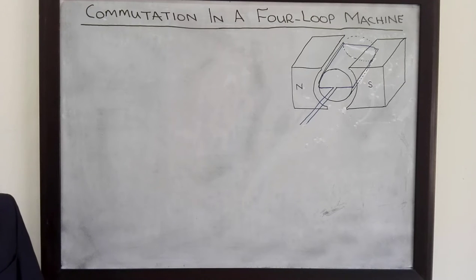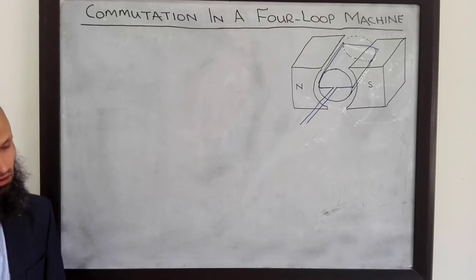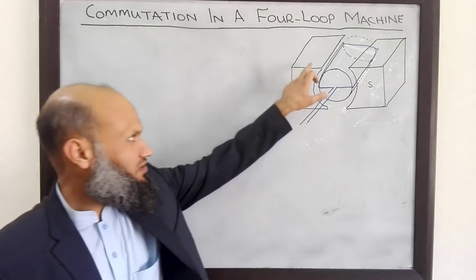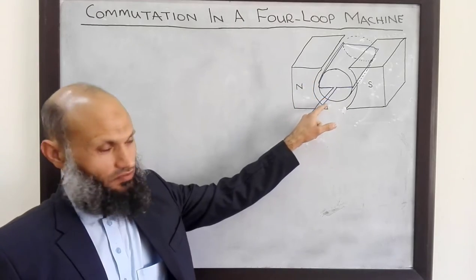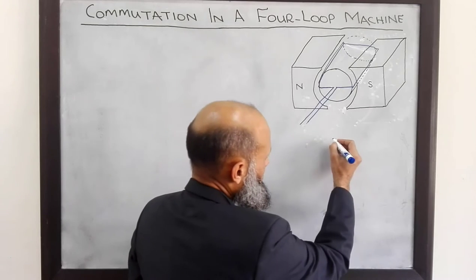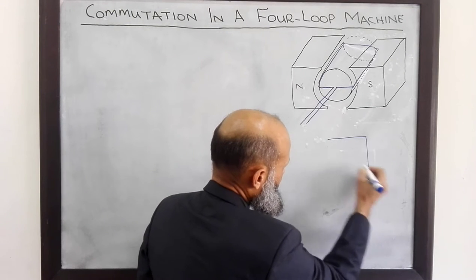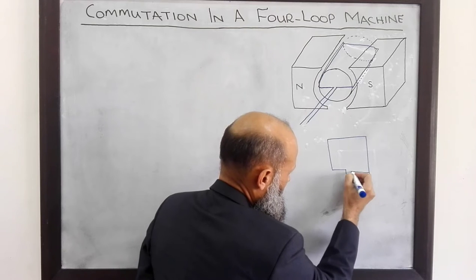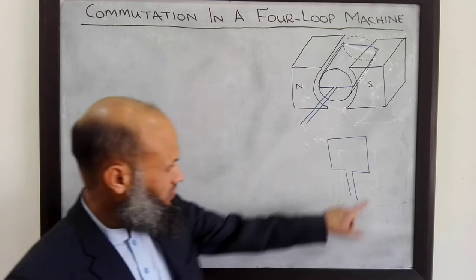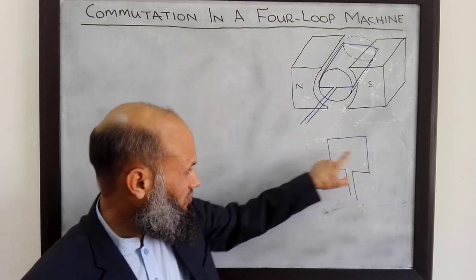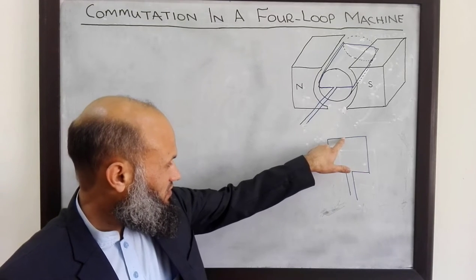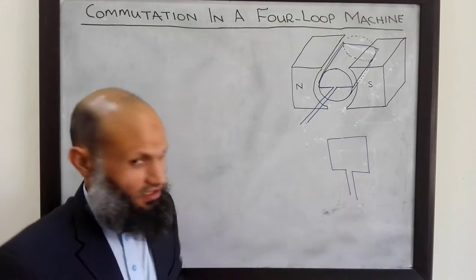Assalamu alaikum. In one of our previous lectures, we talked about a simple loop of wire rotating in a magnetic field created by poles with curved pole faces. We learned that this coil, a single-turned coil of rectangular shape, only has voltage induced in two sides of the coil, and no voltage is induced in the other two segments.